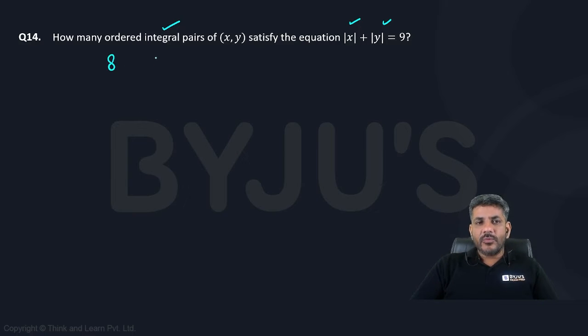One of them can be 8, the other one can be 1. One of them can be 7, the other one can be 2. One of them can be 6, the other one can be 3. One of them can be 5, the other one can be 4. One of them can be 9 and the other one can be 0.